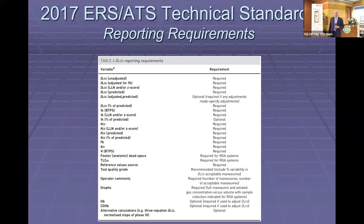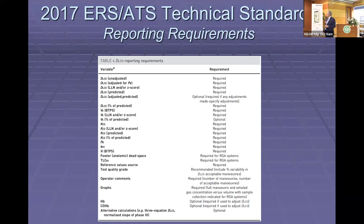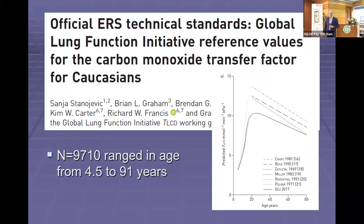There is a table listing the variables that should appear on a report. The ATS-ERS specifies what needs to be reported. The recommended predicted set is the GLI predicted set published in 2018, which will be reviewed in more detail this afternoon.